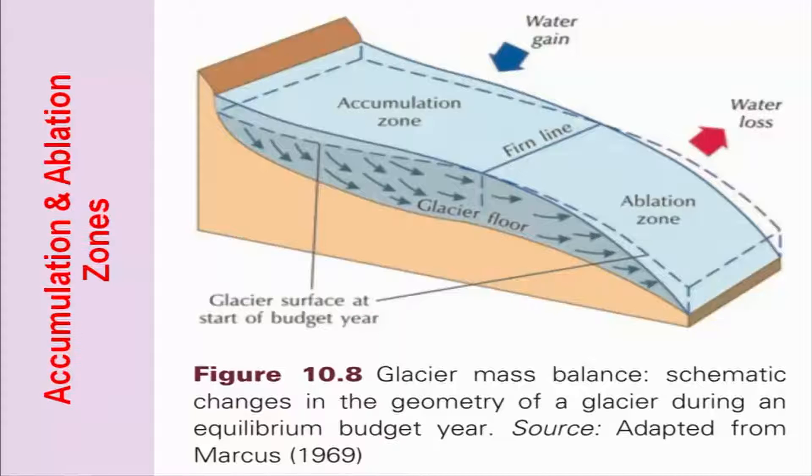Welcome back. In the previous lecture, we discussed about the different types of glaciers, either continental glacier or alpine glacier. We also very briefly discussed about the firn line, or we can say the zone of ablation and zone of accumulation. So we are coming back to this one again.